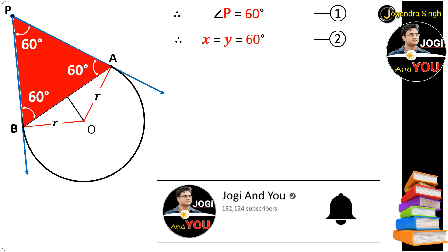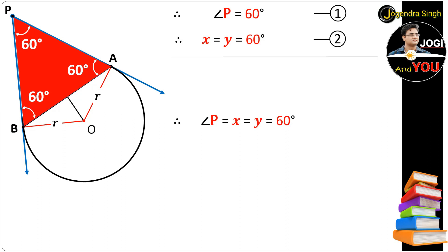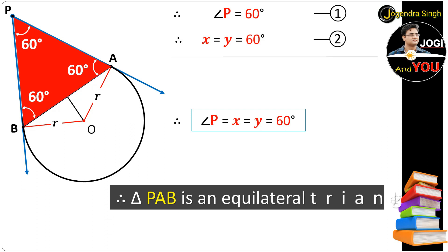Just put this up here. Now we have these two equations. With these two equations, we can say that angle P equals angle x and y. All are equal to 60 degrees. And we know all equiangular triangles are equilateral. That's why triangle PAB is an equilateral triangle.